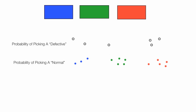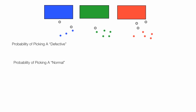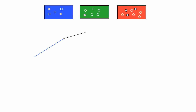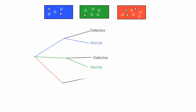To do this I'm going to build a probability tree with several branches. What's the probability of picking something from the blue box and picking a defective or normal part? What's the probability of picking something from the green box — defective or normal? And also from the red box — defective or normal? So I'll build a tree like this.